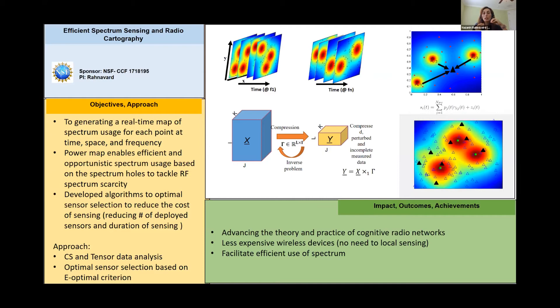And why having a real-time spectrum map is important is because then users can look at the spectrum holes and they can opportunistically share the spectrum, and we can tackle spectrum scarcity.